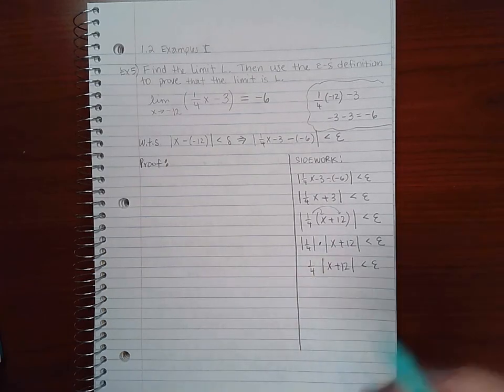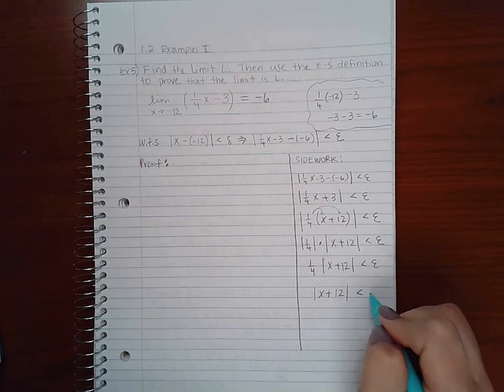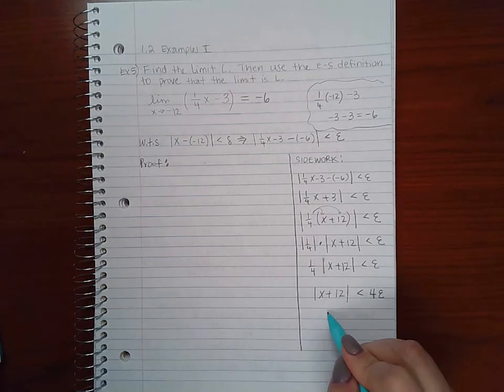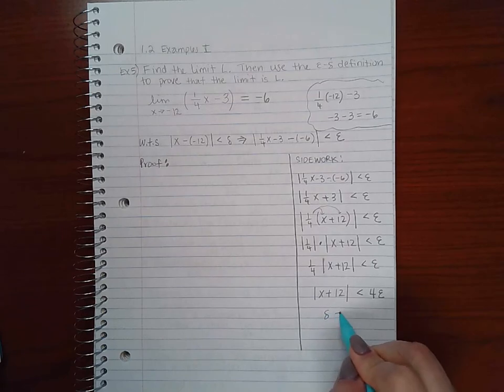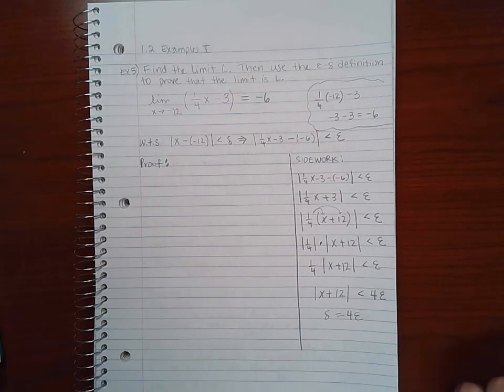Then to get rid of the 1/4, I'm actually going to have to multiply both sides by 4, which means I will get 4 epsilon. Which means my delta will need to equal 4 epsilon.